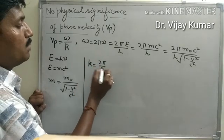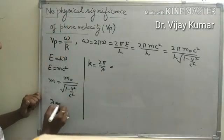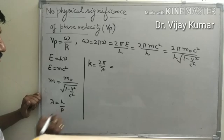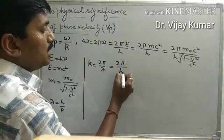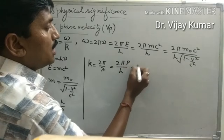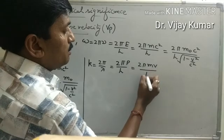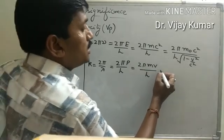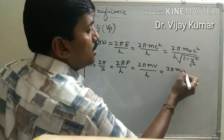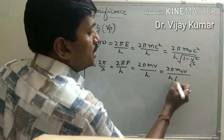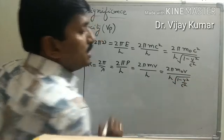Wave number k equals 2π upon lambda, where lambda is the de Broglie wavelength, and de Broglie wavelength equals H upon P. Substituting the value of de Broglie wavelength, k equals 2π upon H upon P, and P is mass into velocity upon H. Putting mass in relativistic form gives k equal to 2π m0 v upon H times under root 1 minus v squared upon c squared.